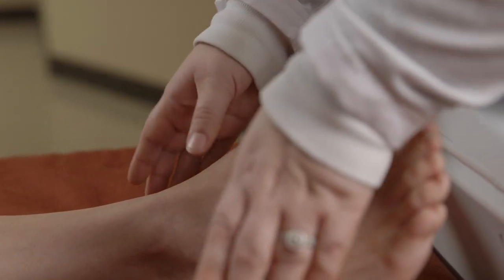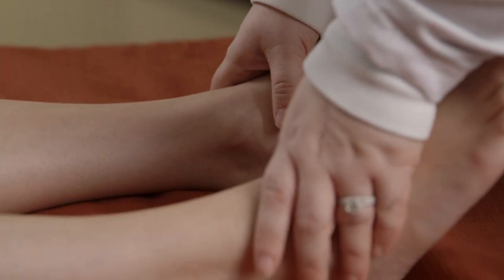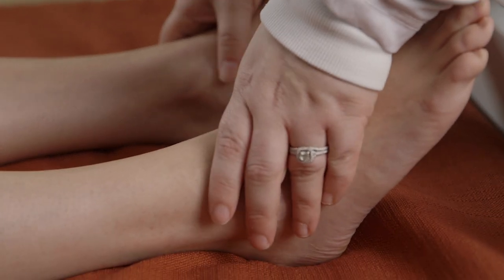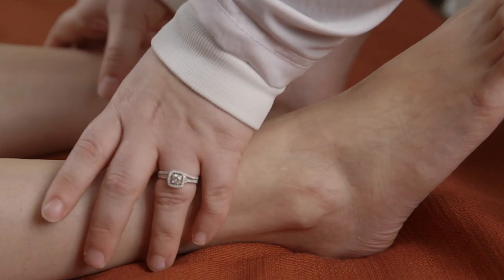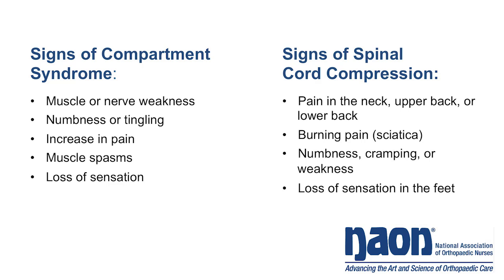The nurse assesses for changes in circulation, oxygenation, and nerve function in an extremity that is casted, immobilized, or at risk due to an injury or surgery. Neurovascular compromise in the lower extremity could be related to compartment syndrome, a serious complication. Patients with spine injury or spine surgery are also at risk for serious complications from neurovascular compromise due to bleeding or swelling that could injure the spinal cord.